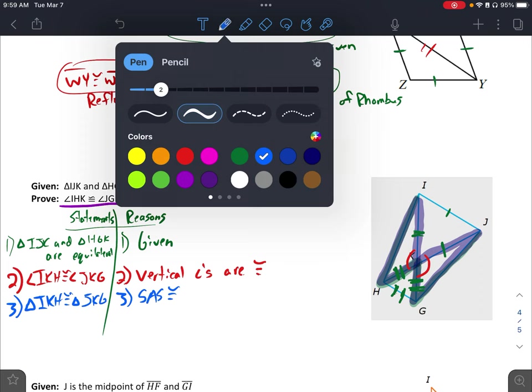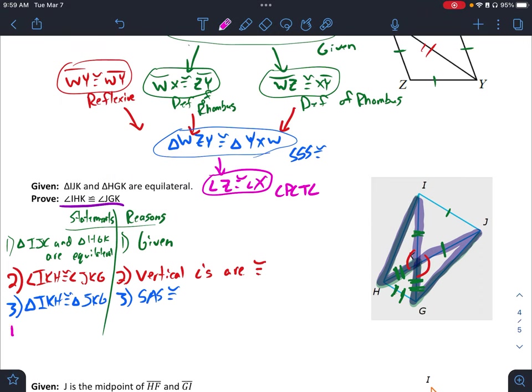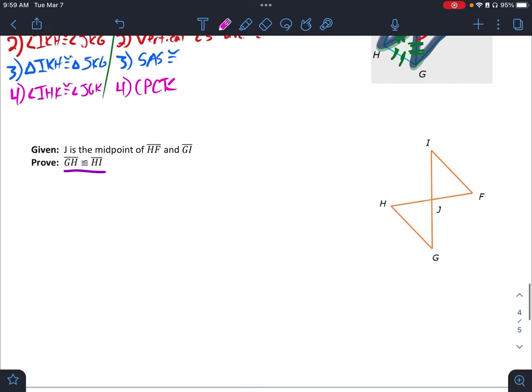And then, lastly, again, end with what we're trying to prove. So, angle IHK is congruent to angle JGK by CPCTC. Then, our last one here.